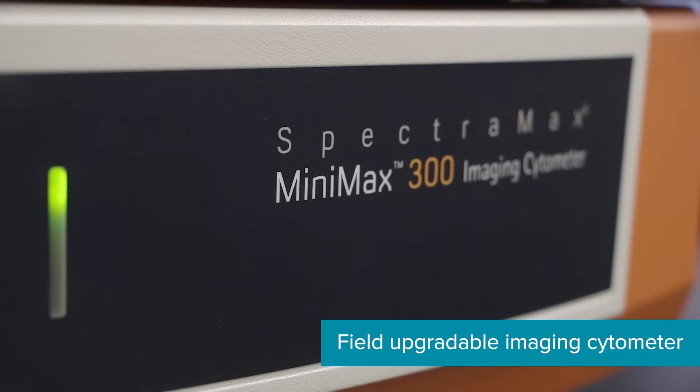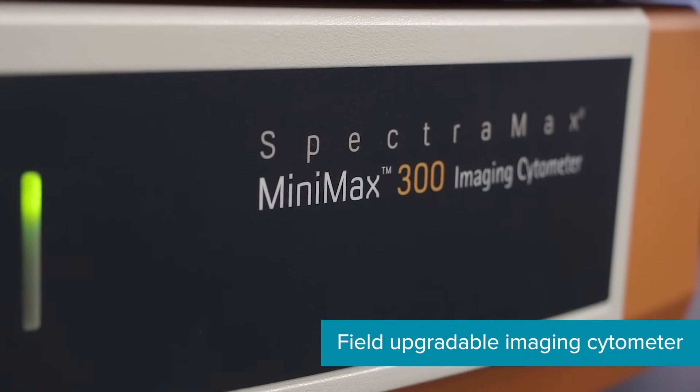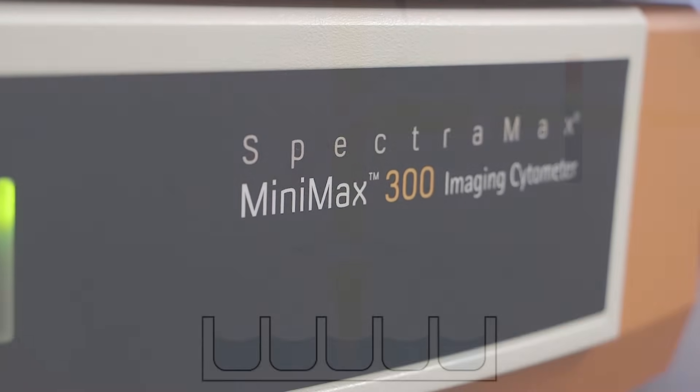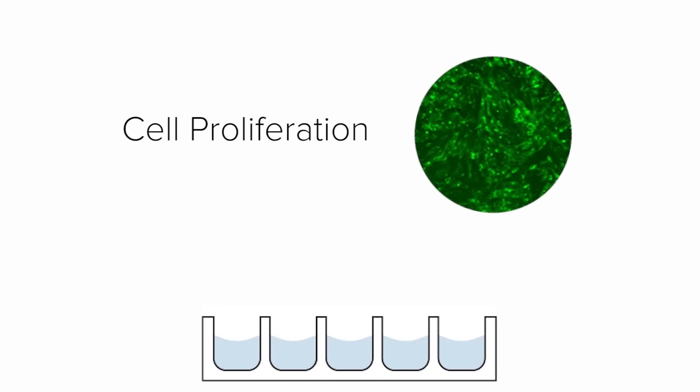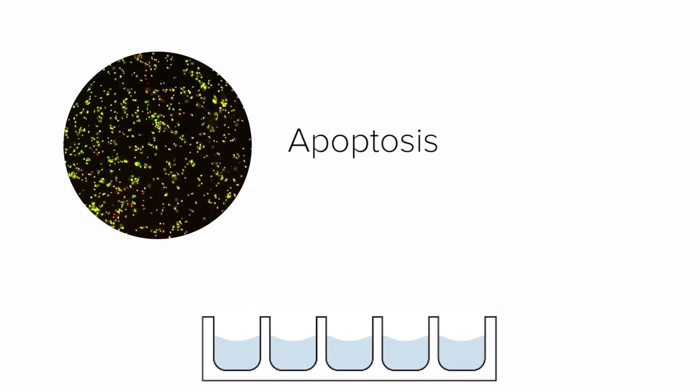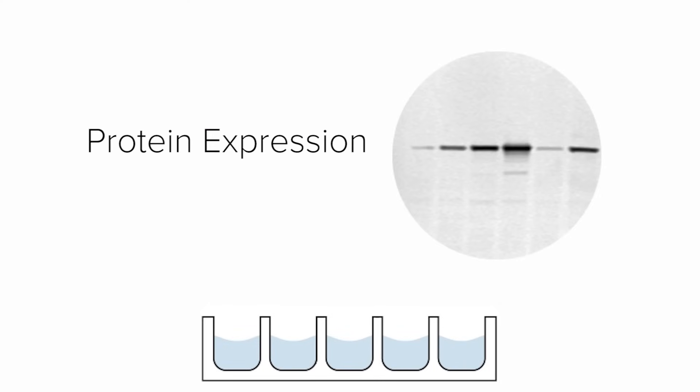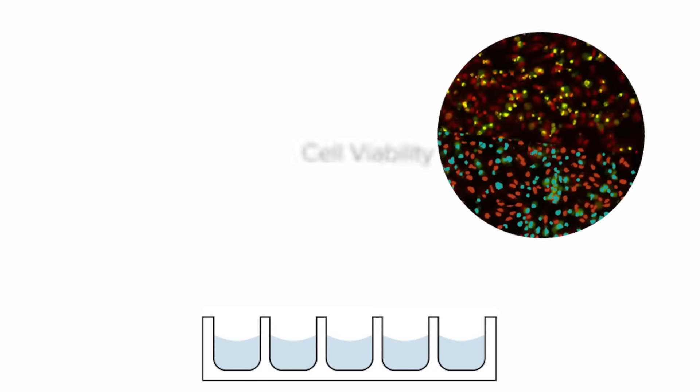Observe the viability of your cells with the SpectraMax MiniMax 300 imaging cytometer. This field-upgradable cellular imaging option enables quick imaging and analysis of cells and provides a front-row view of phenotypic changes that accompany cytotoxicity, cell proliferation, and protein expression.